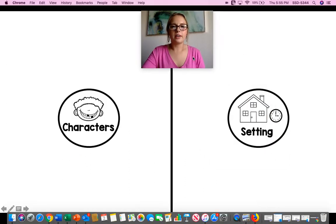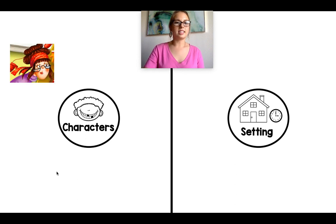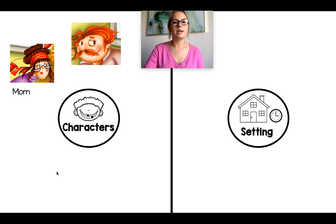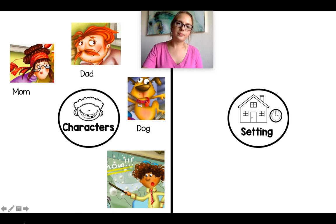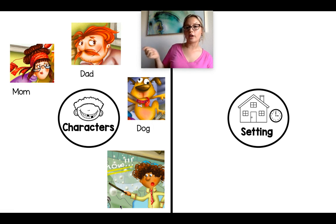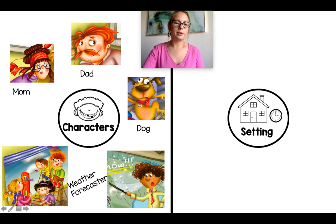Now we're going to talk about the characters. Remember, characters are the people or animals in the story. Who was this character? It was Mom. What about him? Dad. Who's that? Dog. This one's tricky — this person was on TV telling you about the weather. Do you remember that special vocabulary word? Weather forecaster. And who are all these people? The kids, or the children.